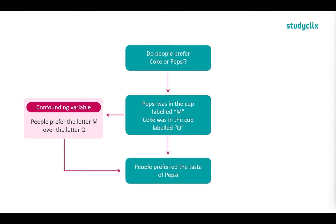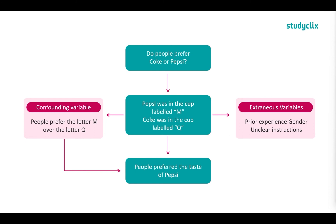In this example, our confounding variable is that people prefer the letter M over the letter Q. This swayed the results because people had a preference for M, not actually for Pepsi. It is related to our independent variable — how we implemented the experiment — and it had an effect on our dependent variable. For extraneous variables, maybe people grew up drinking Coke over Pepsi, or maybe people drank only Pepsi as a child and this was their first time trying Coke. We can't tell what effect that had. Similarly with gender — maybe girls like Pepsi and boys like Coke. Or maybe the instructions were unclear and participants didn't understand them. We don't know what effect these had; they could have had an effect, they may not, and we can't predict it.